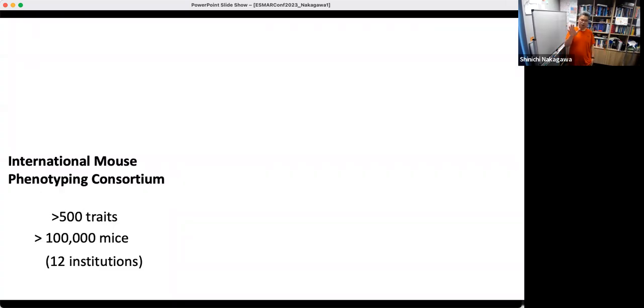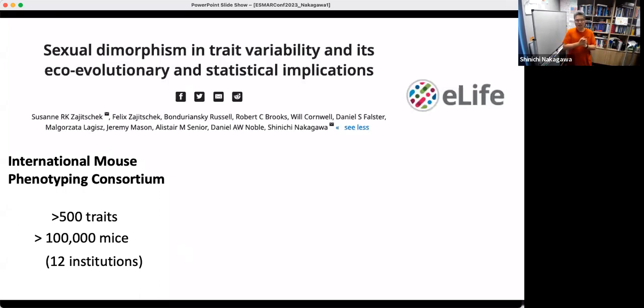An example of big data we use is the International Mouse Phenotyping Consortium. You may not be familiar with this, but all data is available online. It has more than 500 traits, 100,000 mice of both males and females across 12 institutions across the globe. Using this dataset and this split-analyze-meta-analyze method, we looked at the sexual dimorphism in not the mean traits, but the variability of the traits. The distribution widths of the traits, whether there's sexual dimorphism or sex differences. And it indicates, certainly yes.